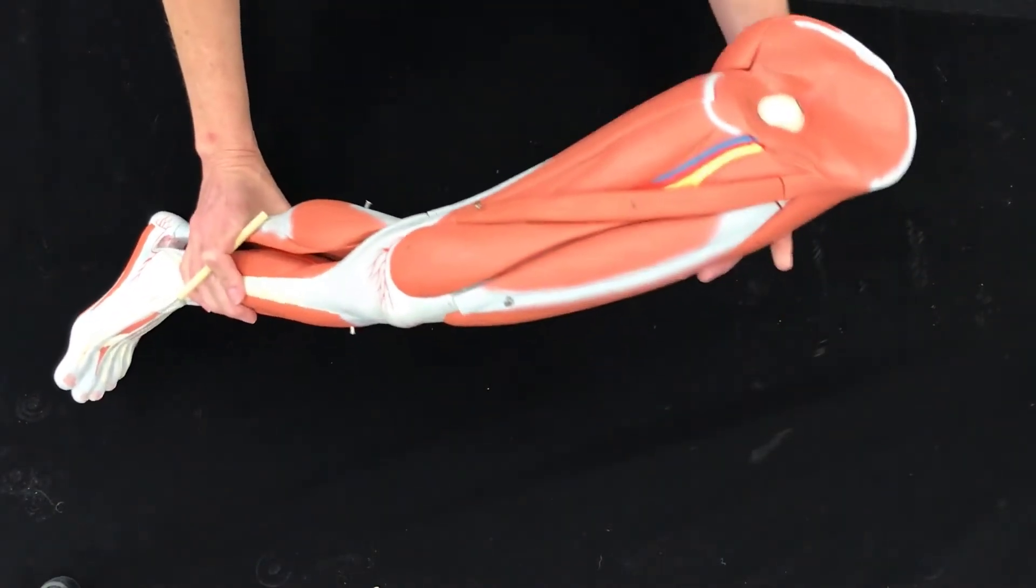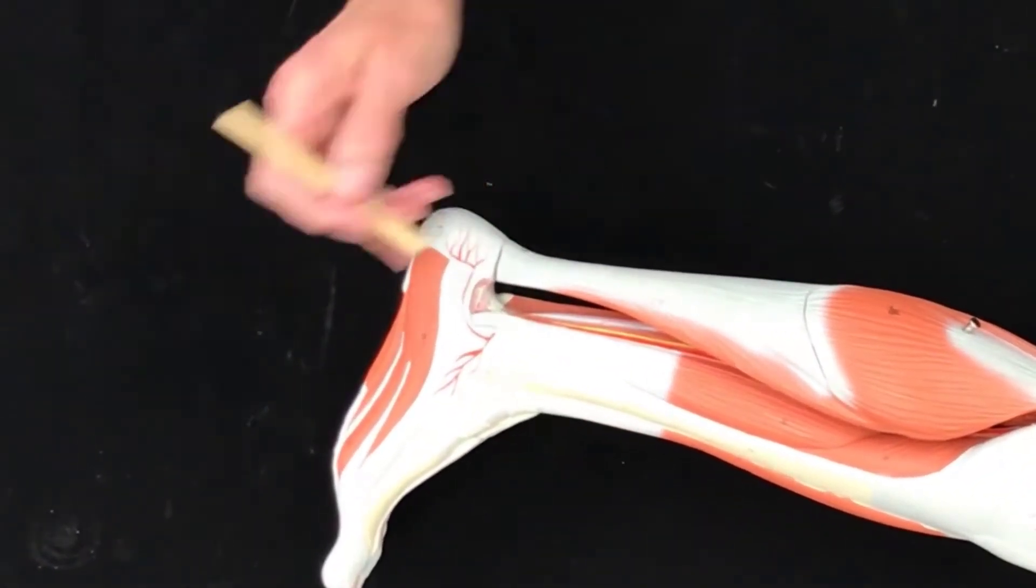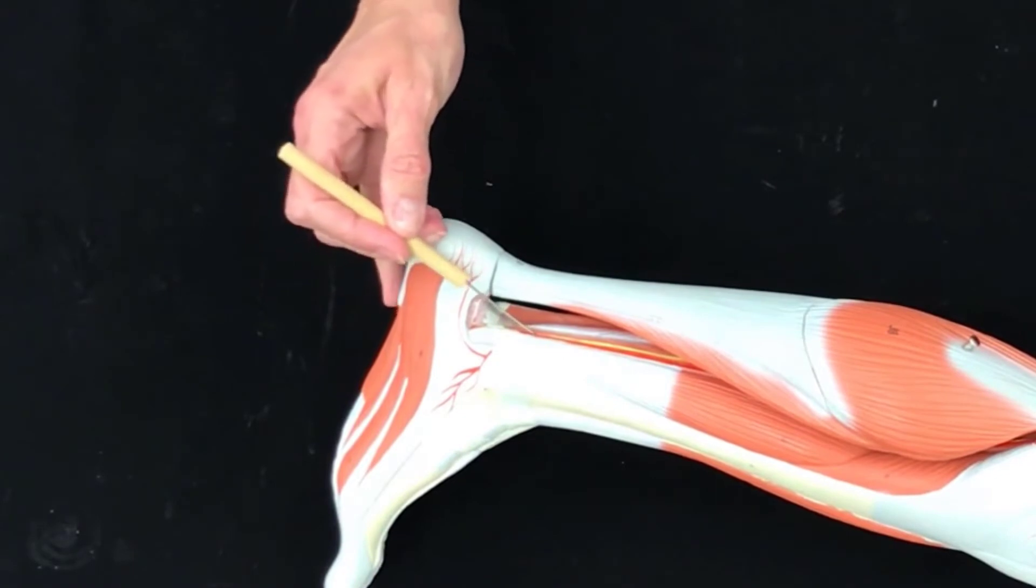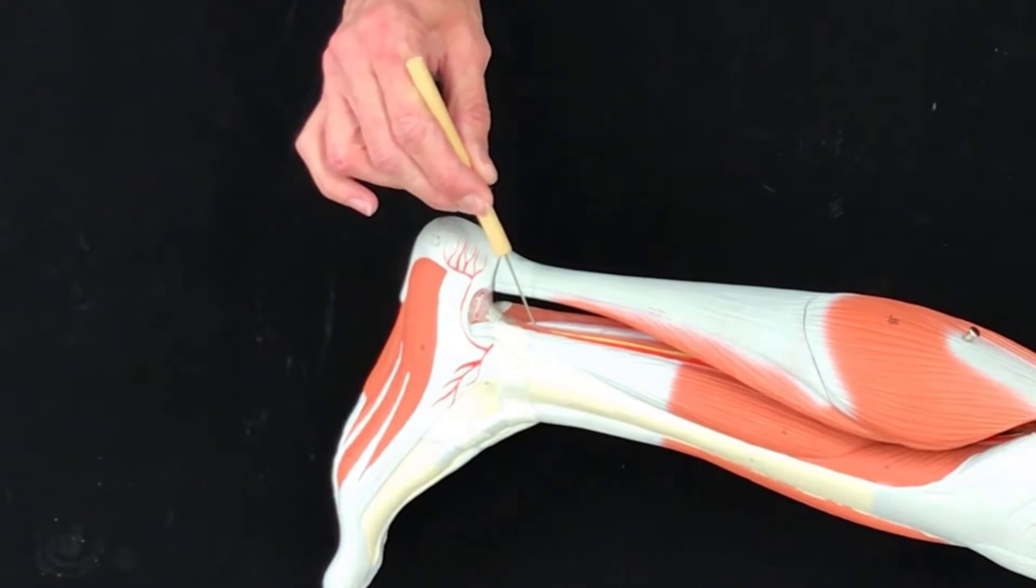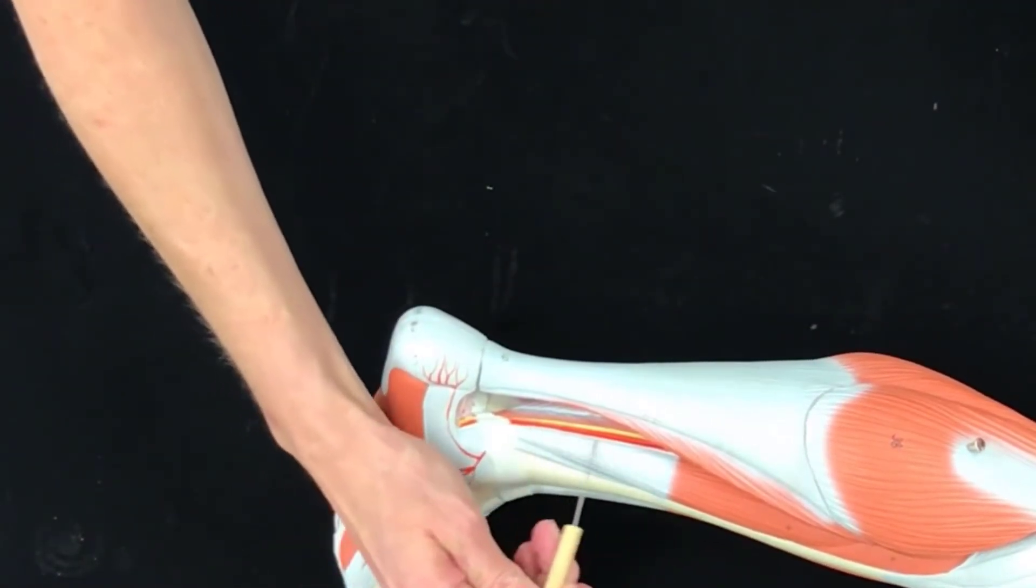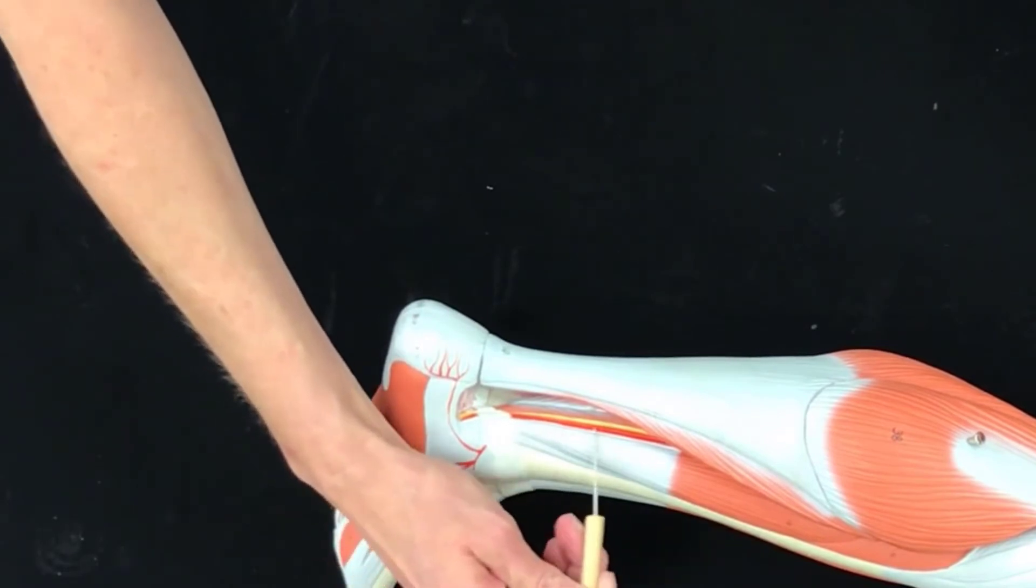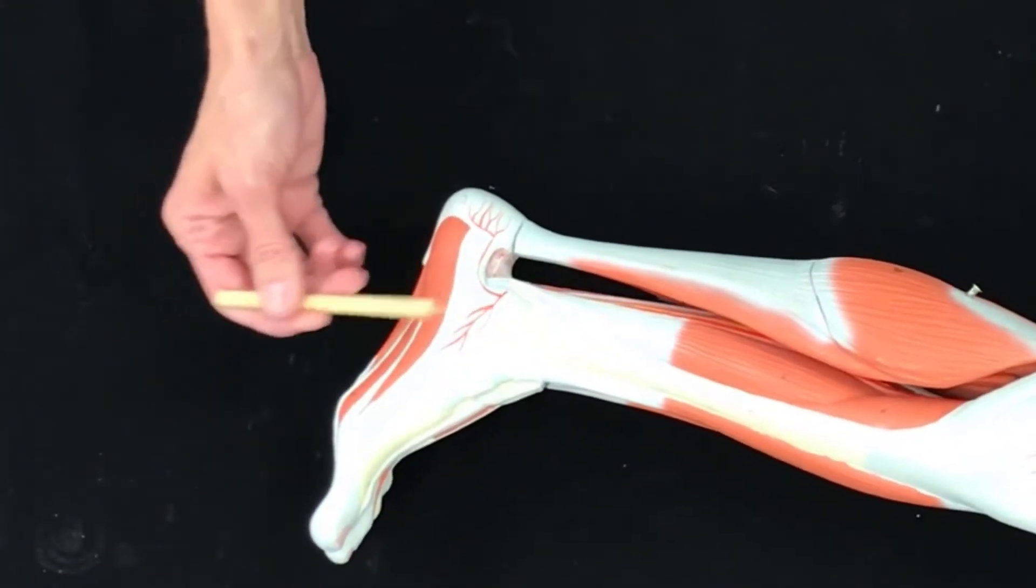Now let's move on down here, and this little red guy is the posterior tibial artery. So right here is the posterior tibial artery, and now we're down here by the ankle.